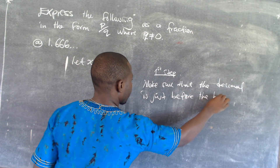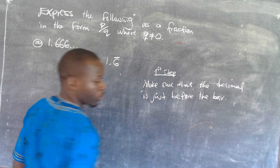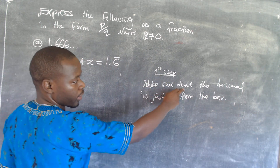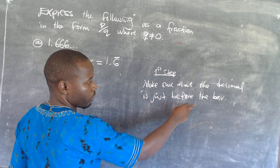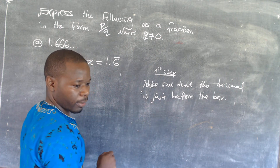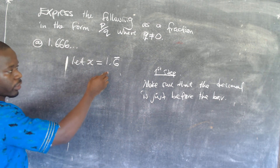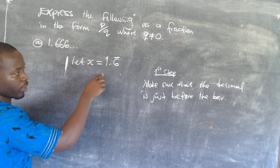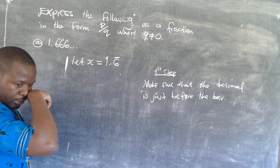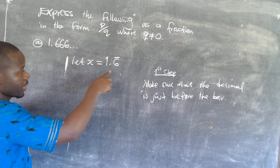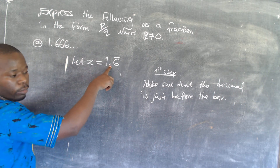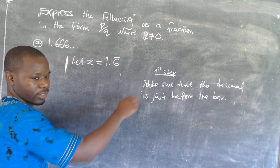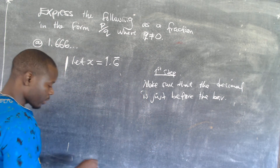Just before the bar — this is what we are trying to achieve. So the first step is: make sure that the decimal is just before the bar. When you look at this expression, we have 1.6̄, and the decimal is just before the bar. So which means that we have covered the first step.